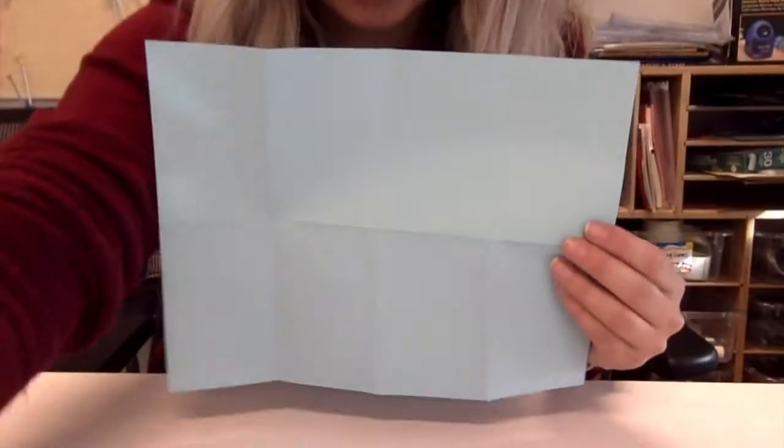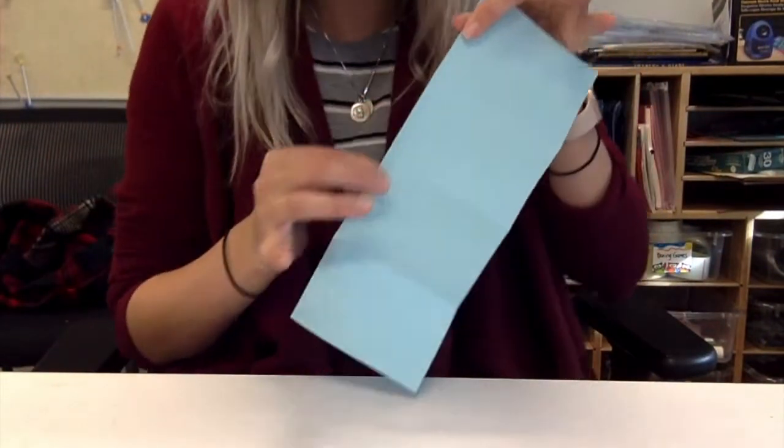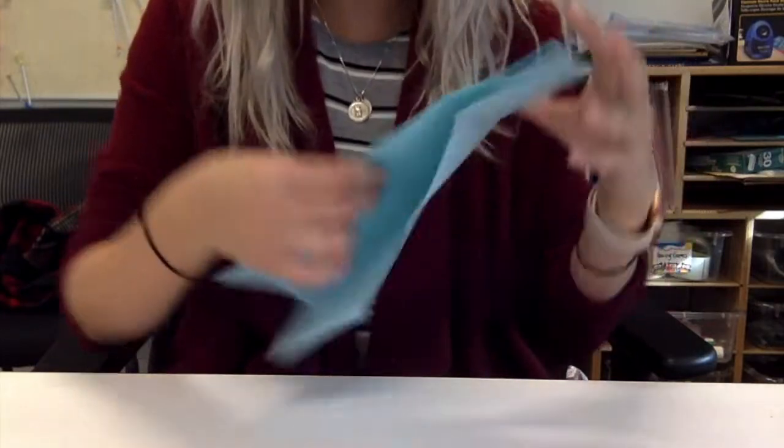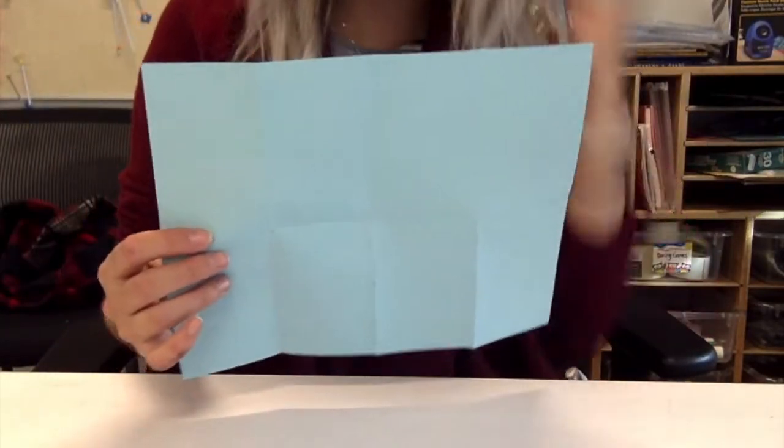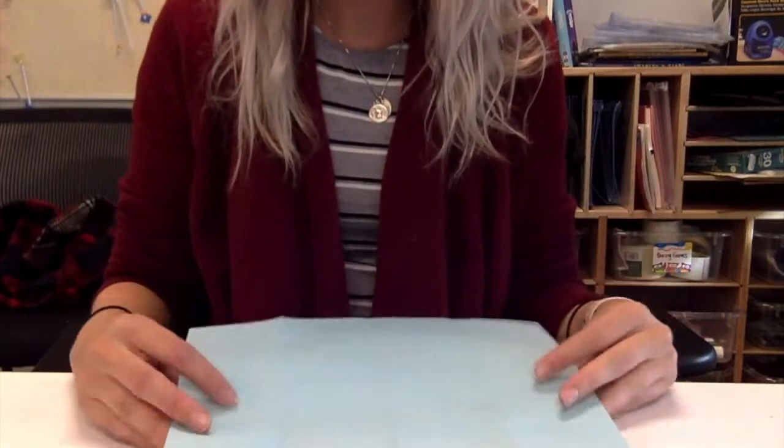Then you can open it all back up again. If you want to do it a third and a fourth time, go ahead. The more you fold it, the more you press on those creases, the better your book will turn out. I'm just gonna do it two times, once in each direction.